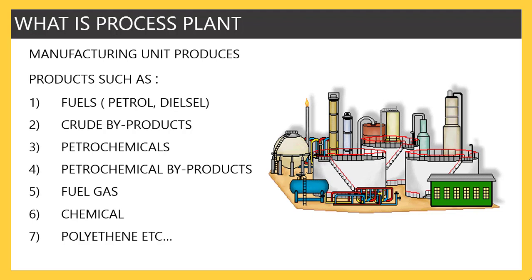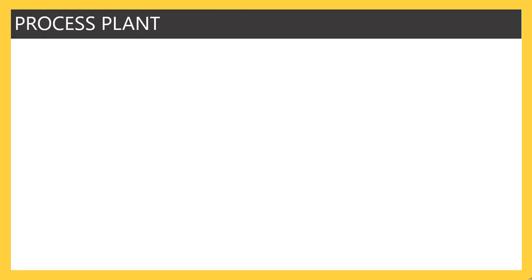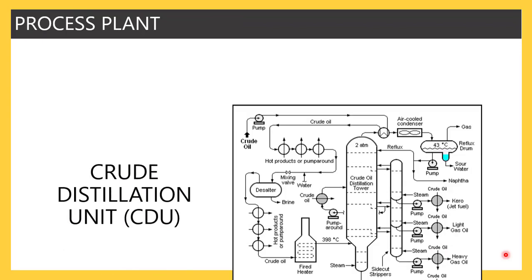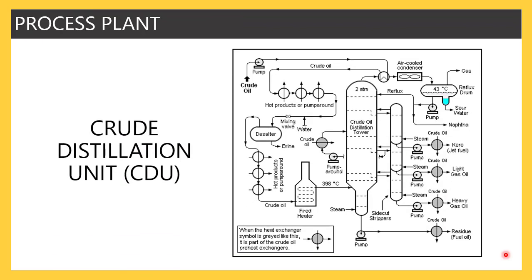It varies from plant to plant. Chemical plants are more into making chemical products, and petrochemical plants are more into making petrochemical products. In this video, we will try to understand a few of the engineering activities involved in making a process plant, using a crude distillation unit as our example.